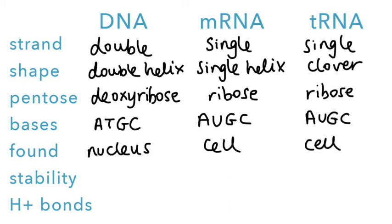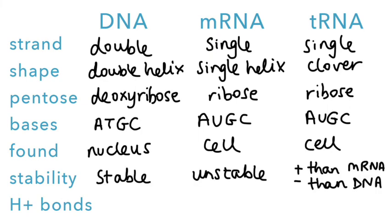DNA is located inside the nucleus, whilst mRNA and tRNA are found throughout the cell. Due to its double helix, DNA is very stable. mRNA is unstable, and tRNA is less stable than DNA but more stable than mRNA. DNA and tRNA have hydrogen bonds, but mRNA doesn't.